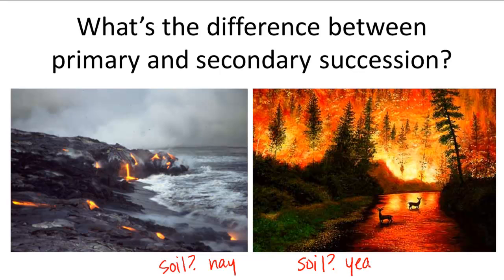So the main difference between these two types of ecological succession is the presence of soil at the beginning of the process of succession. In fact, the main feature of primary ecological succession is soil formation. So primary ecological succession can occur on a newly formed volcanic island or on a rock exposed from a receding glacier.